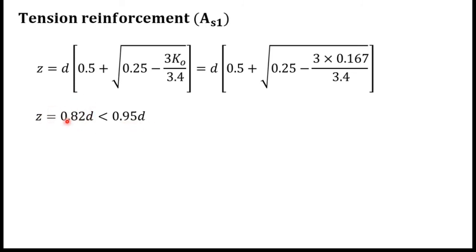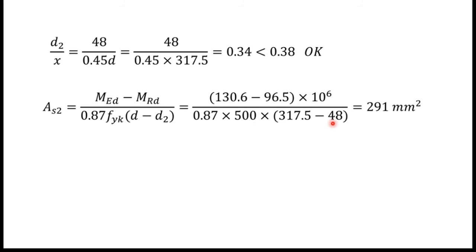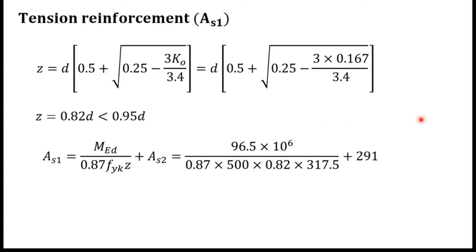As1 (tension reinforcement) equals MEd / (0.87·fyk·z) + As2. MEd is 130.6 kN·m, fyk = 500, z = 0.82 × 317.5 mm, and As2 = 291 mm². Substituting and simplifying gives As1 = 1144 mm².